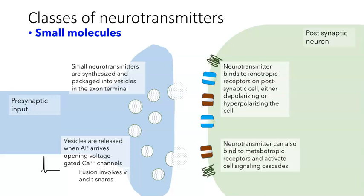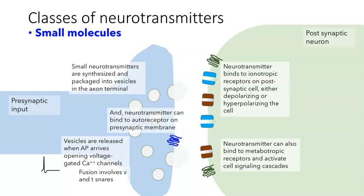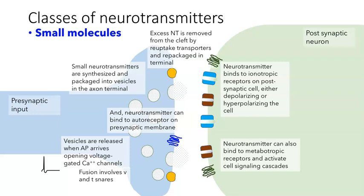Neurotransmitter can also bind to metabotropic receptors and activate cell signaling cascades. Neurotransmitter can also bind to autoreceptors on the presynaptic membrane and provide feedback to the presynaptic cell about how much neurotransmitter is being released. Excess neurotransmitters are removed from the cleft by reuptake transporters, found in the presynaptic cells as well as in glial cells. The small molecules are then repackaged in the terminal so that they can be used over and over again.